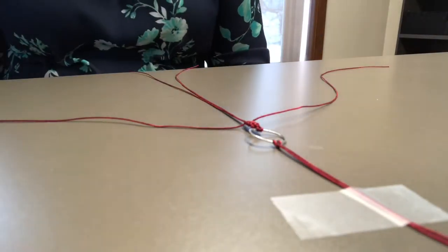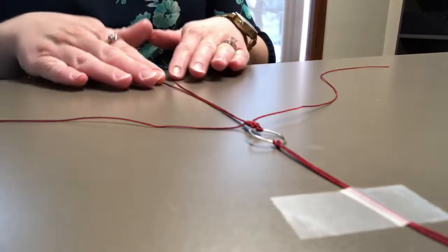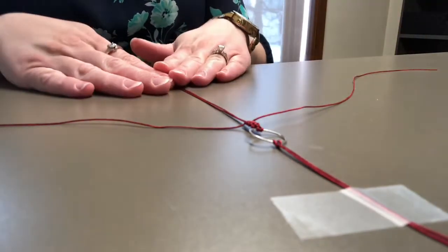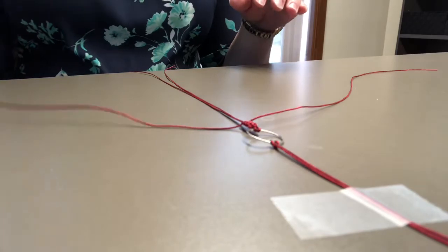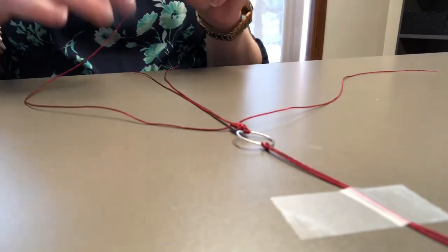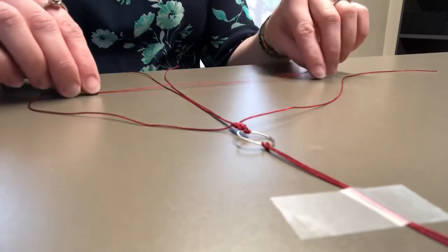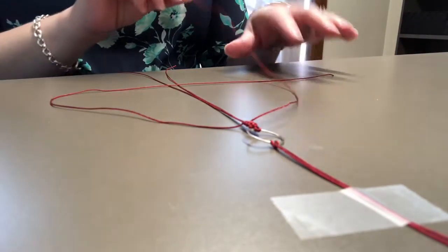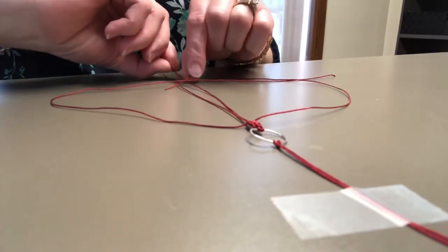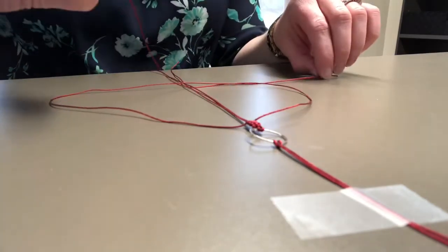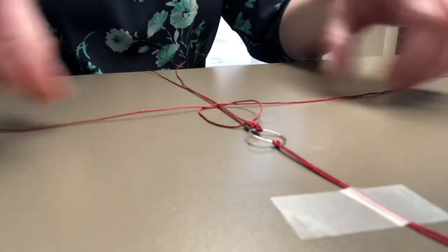You'll have four strands all together and you will take the right cord and fold it over the two in the middle. Take the left and put it underneath and through the loop, and then you will pull to tighten it towards the top.